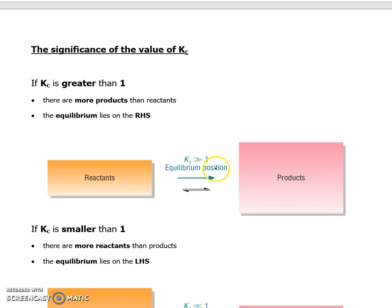Okay. Now, the significance of the value of Kc. If Kc is greater than the number one, then that means that there are more products than reactants. And it just figures because it's a fraction. Because Kc is given by a fraction, if your top value is greater than your bottom value, then it's going to be one or greater. It's going to be greater than one. So the equilibrium rests on the right hand side.